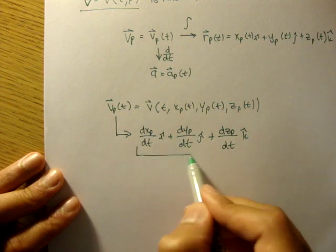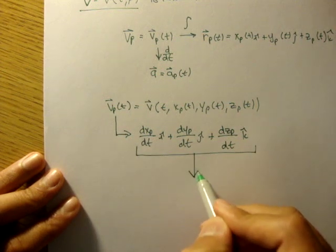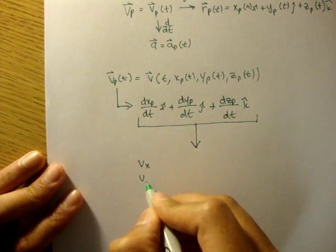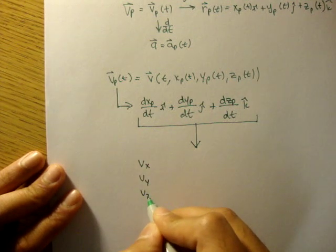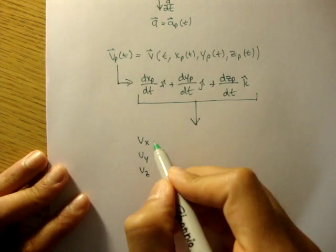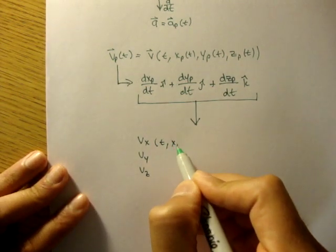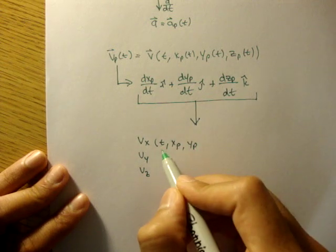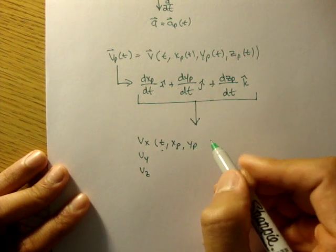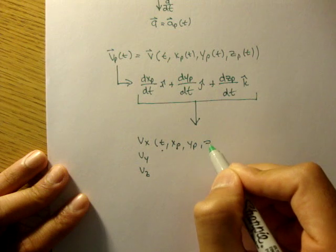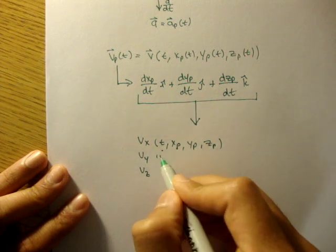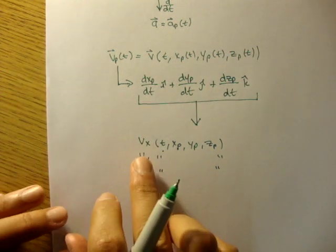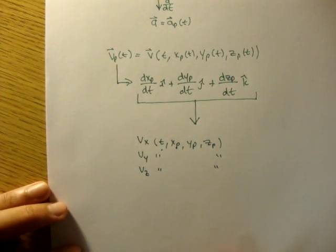And you know that all this is going to be equal to vx, vy, vz. And of course, each one of these are dependent on time, the x position, the y position of each particle, and the z position, the z-coordinate. And it's the same for the velocity in the y direction and in the z direction.